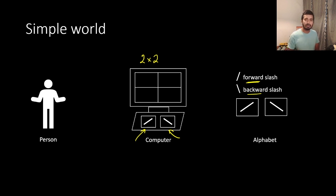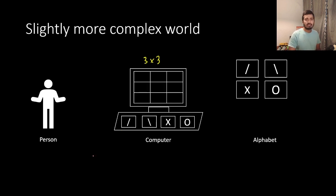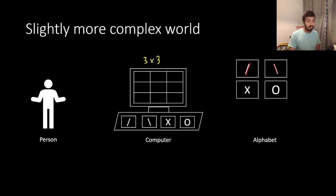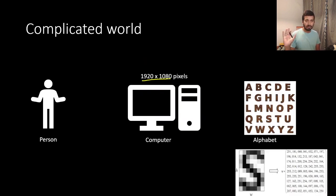I am going to talk about Luis Arano's videos and cover the same thing. We are going to talk about pixels — starting with a 3 by 3 pixel grid. We will look at shapes: a forward slash, backward slash, and X. Then we will talk about pixels on the computer and all the characters in the alphabet.